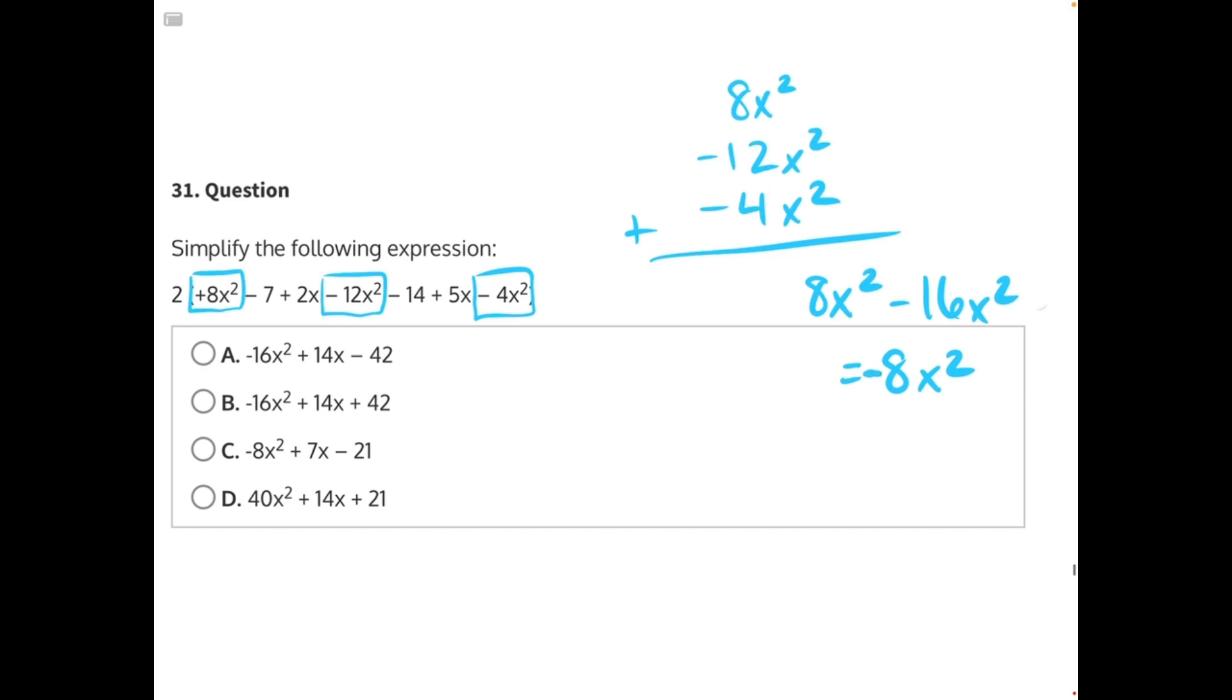So the beginning of our simplified expression would look like this. We would have the 2 on the outside of the parentheses and then a negative 8x squared right at the front with all of the rest of our simplified numbers to come.